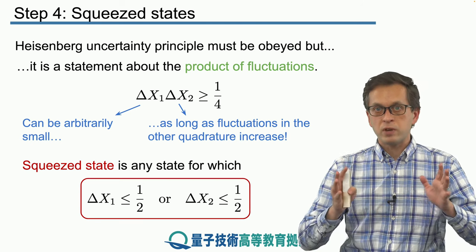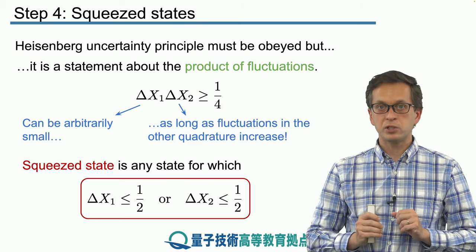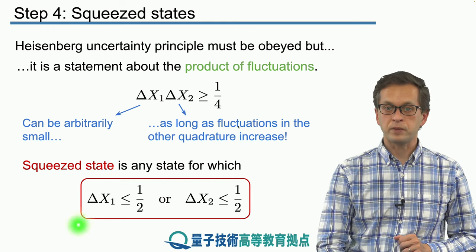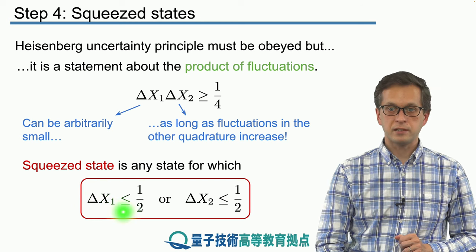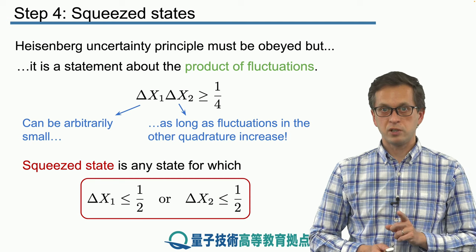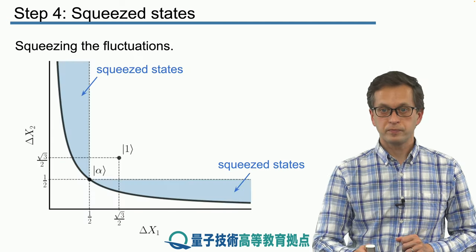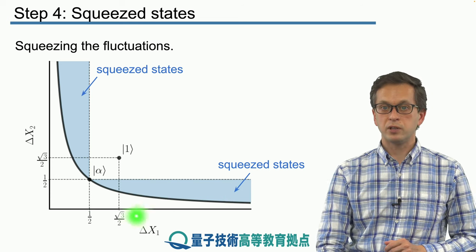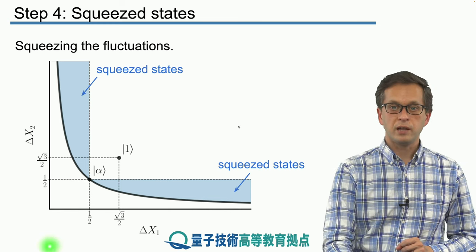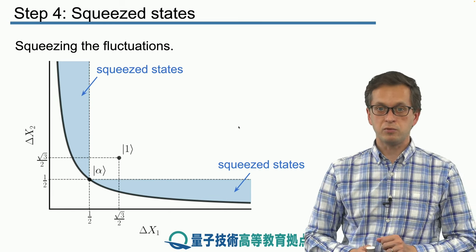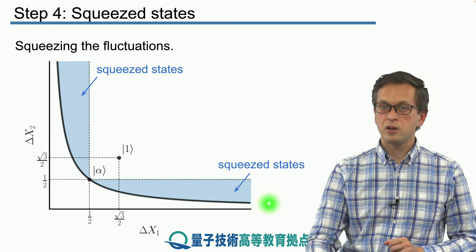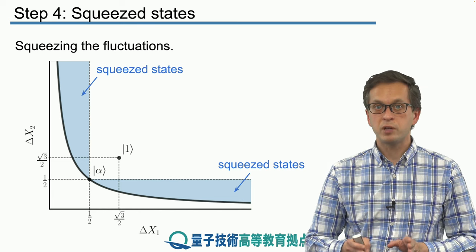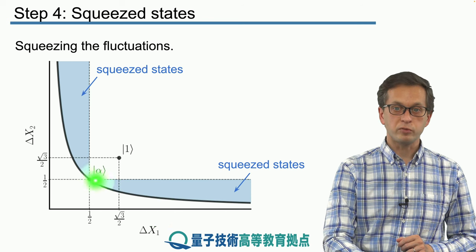We use the term squeezing because we think of these states as having been squeezed in one quadrature while expanded in the other. Any squeezed state obeys: either its position quadrature fluctuation is less than 1/2, or its momentum quadrature fluctuation is less than or equal to 1/2. In our Argand diagram — the phase-space picture — the horizontal axis plots fluctuations in dx1 and the vertical axis plots fluctuations in dx2. The thick line represents all minimum uncertainty states, and we saw an example of those in the form of coherent state alpha.